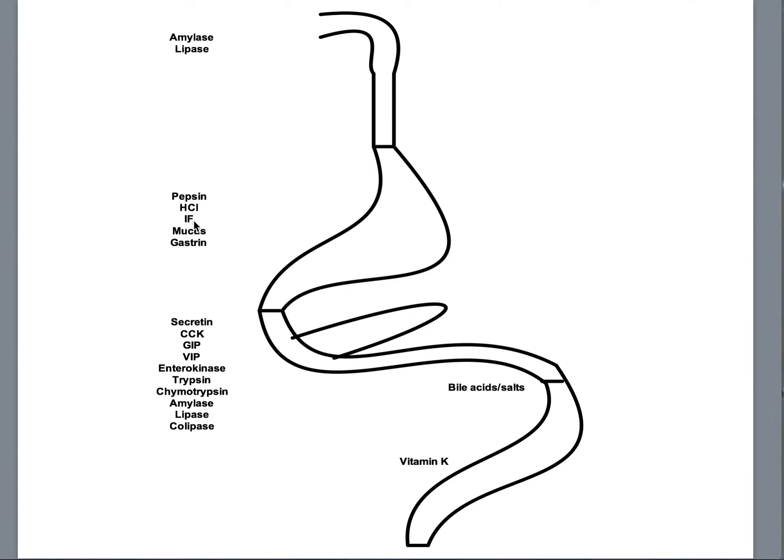What else do we have on our list? We've got all of these. We've got mucus, we've got gastrin, and I have secretin, CCK, GIP, VIP, enterokinase, trypsin, chymotrypsin, amylase, lipase, colipase. Oh my goodness, it sounds like a lot.